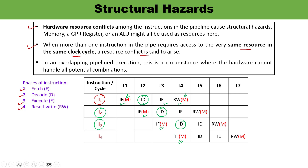But if you observe carefully, you will find that in clock cycle T4, the same resource — memory — is being required by both instruction I1 and instruction I4 at the same time. Memory is a resource, so there is a conflict. Both instructions require the same memory simultaneously, which creates a possibility of resource clash, and that leads to a situation of structural hazard.